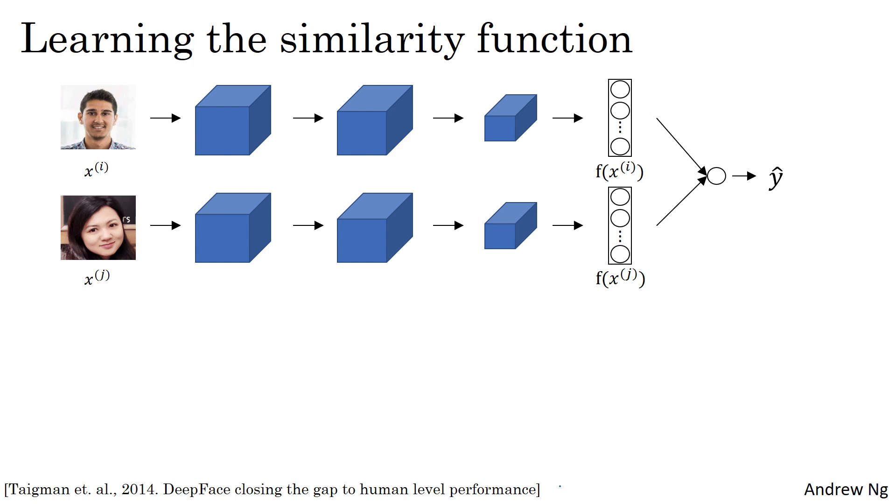Another way to train a neural network is to take this pair of neural networks, to take this Siamese network, and have them both compute these embeddings, maybe 128 dimensional embeddings, maybe even higher dimensional, and then have these be input to a logistic regression unit to then just make a prediction.